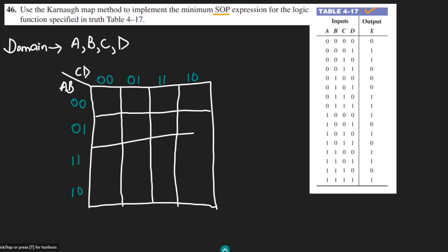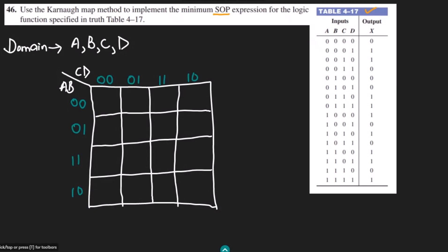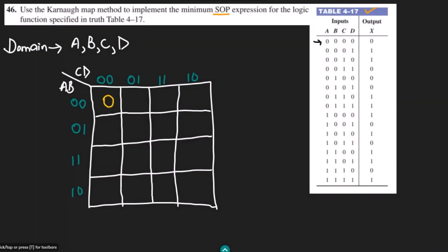These are the cells for each binary combination from truth table 4.17. I need to look for all the values which are 1s and write all the 1s and 0s for all the combinations. The first combination is 0000 and its output is 0, so I write 0. The second one is 0001, which is 1, so I write 1. Similarly, 0010 is also 1.